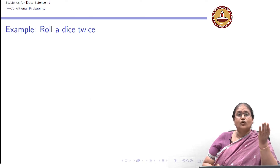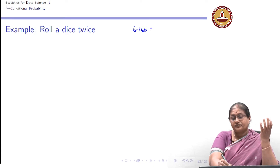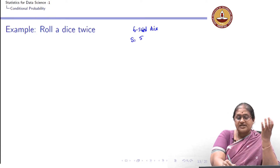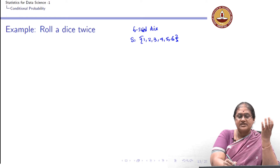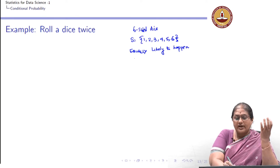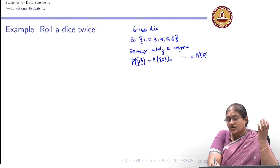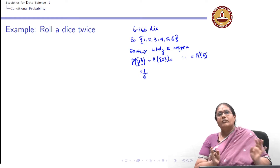Let me have the experiment of rolling a dice twice. I am assuming this dice is fair — it is a 6-sided dice. If I throw it once, the sample space can have any one of the outcomes 1, 2, 3, 4, 5, 6. I assume all outcomes are equally likely, which means the probability of each outcome is 1 by 6.